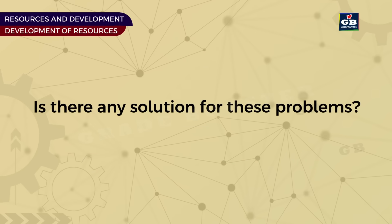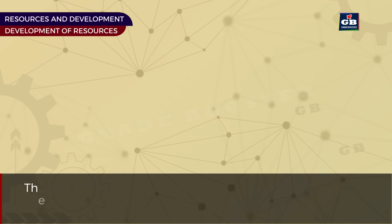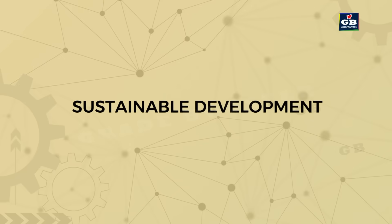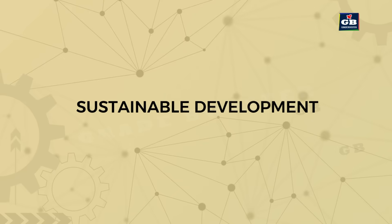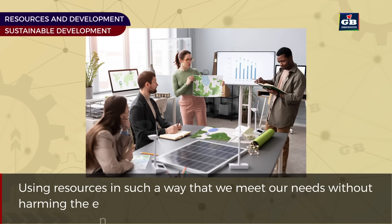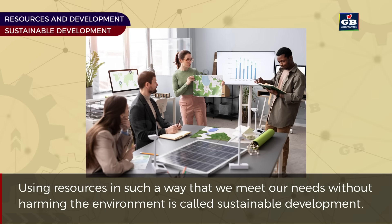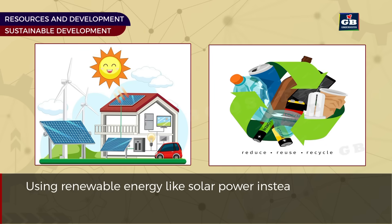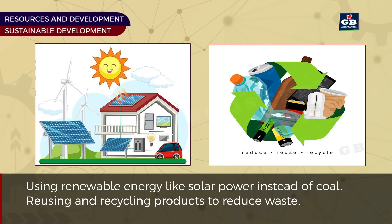Is there any solution for these problems? The solution is that resources must be used wisely and sustainably. Sustainable Development means using resources in such a way that we meet our needs without harming the environment. It ensures that resources are available for future generations. For example, using renewable energy like solar power instead of coal, and reusing and recycling products to reduce waste.